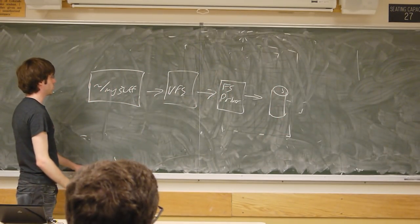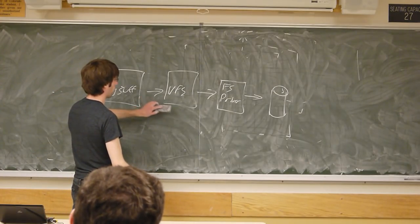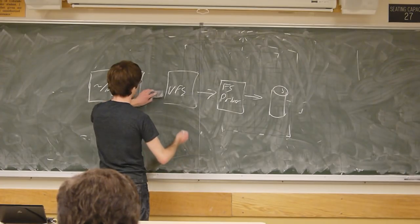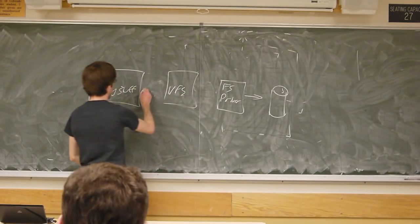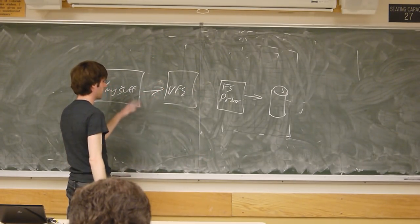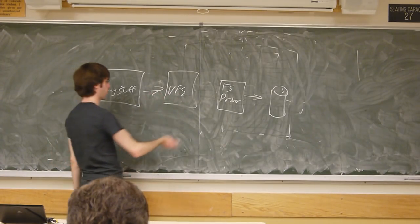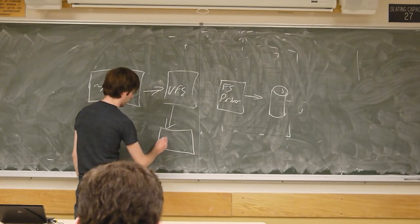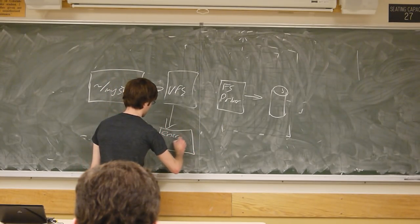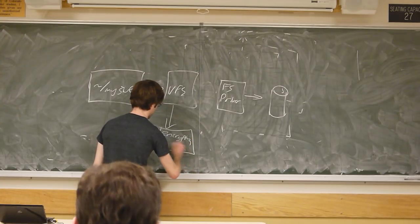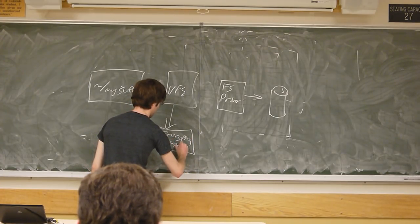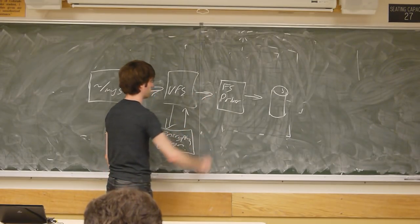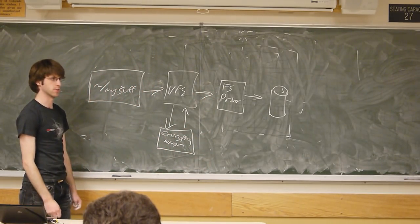What we're going to do is add one step inside this chain. With our file system, it's still going to talk to VFS because that's what everything in user space talks to, but our FUSE module is actually going to implement our encryption wrapper, which is then going to talk back to VFS, which will then talk to the file system driver and talk to the hard disk.